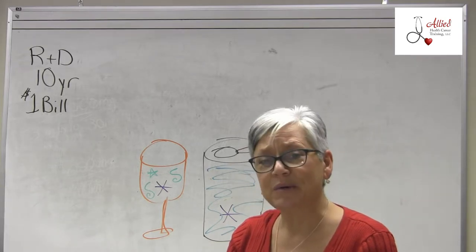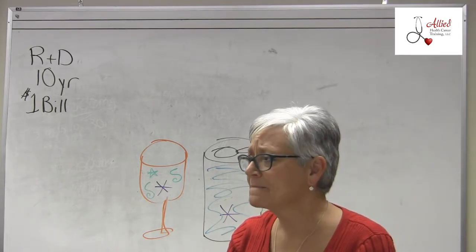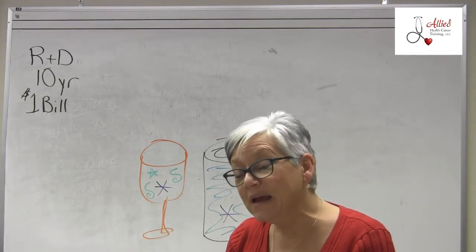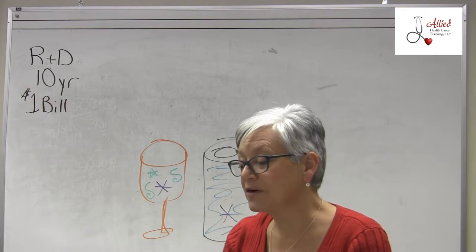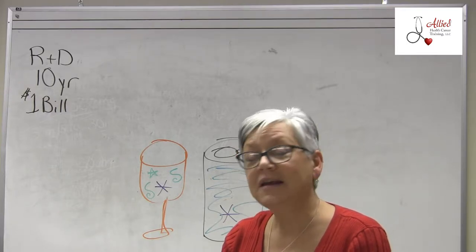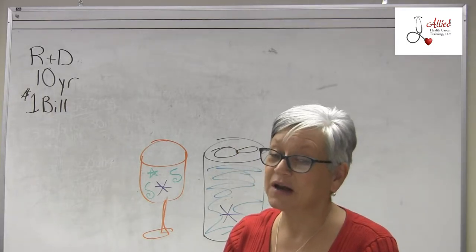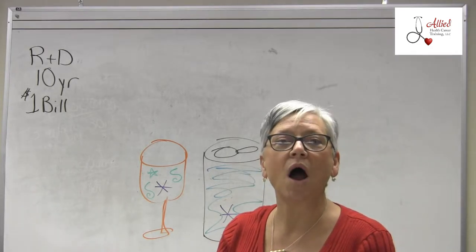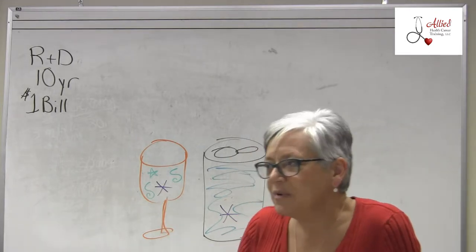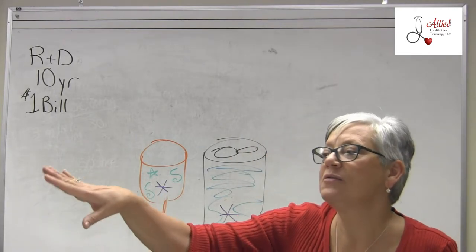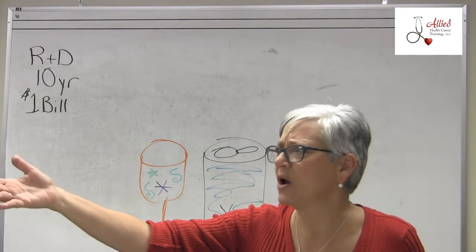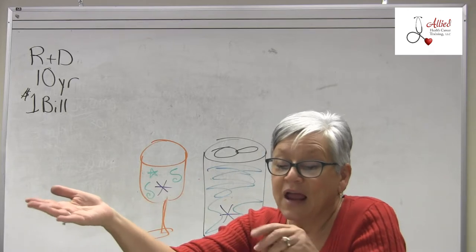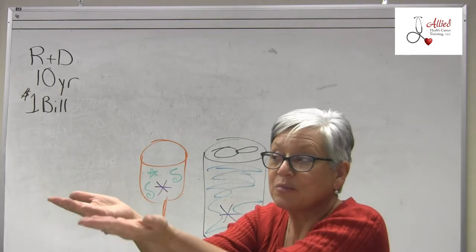After spending a billion dollars and ten years to get a drug to market, they need to recoup some of that money. Otherwise, who would ever come up with a new drug? No one, because there'd be people waiting for you to bring your brand new drug to market, and then they'd buy one pill and replicate it and bring it to market as generic. So the FDA says, 'Good job making that new drug - now nobody else can make it.'